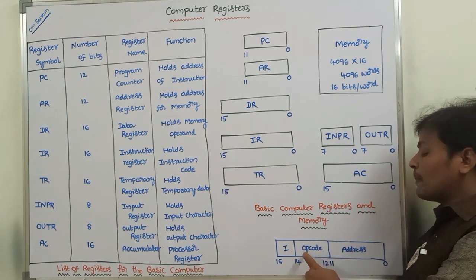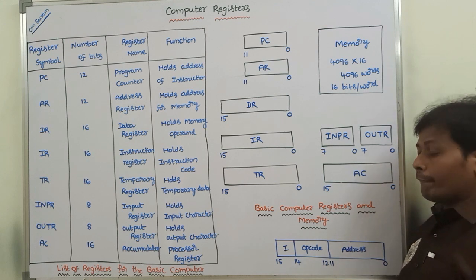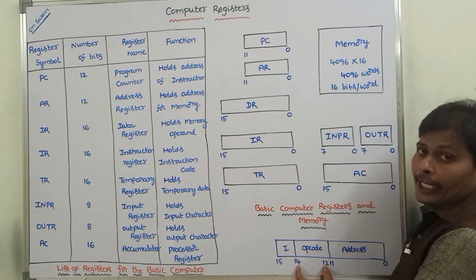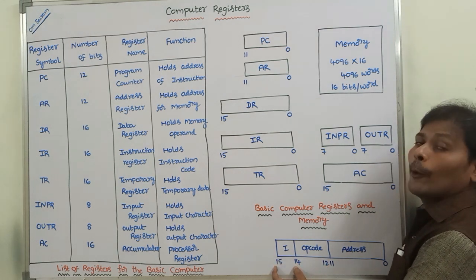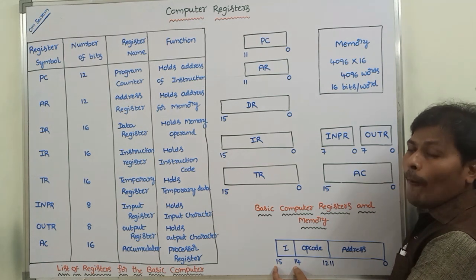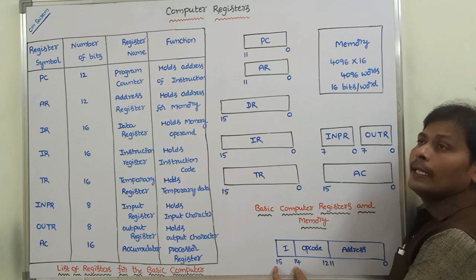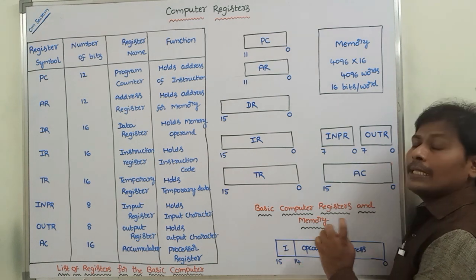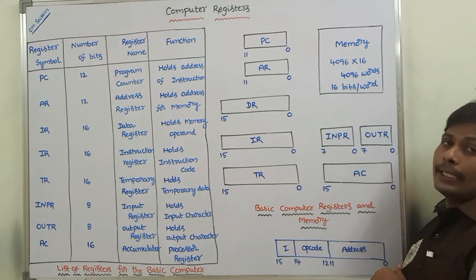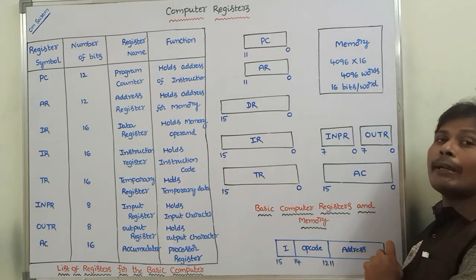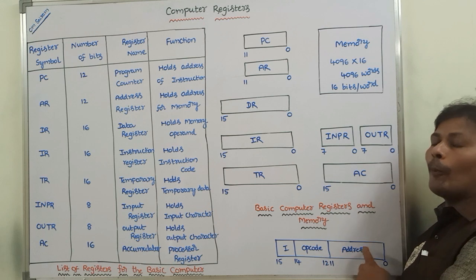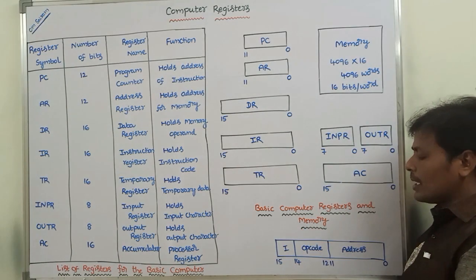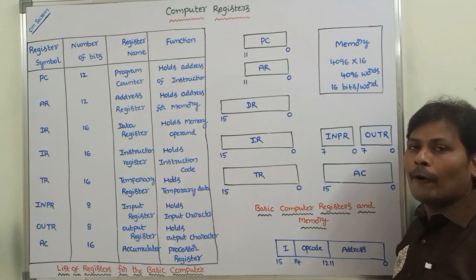The specified operation is to be performed using the opcode field. The opcode field contains 3 bits, from bit 12 to 14. The mode field contains only 1 bit — either 0 or 1. If it is 0, it is a direct address; if it is 1, it is an indirect address. Based on the direct or indirect address, we fetch the operands from the memory or a register, then perform the operation specified in the opcode field of the instruction.